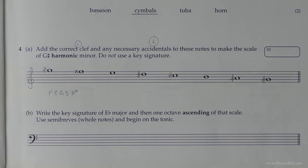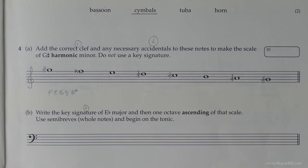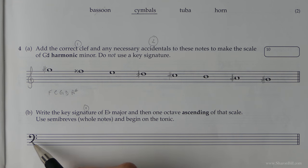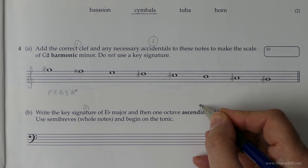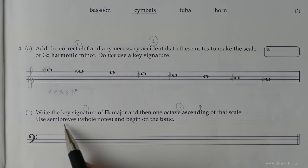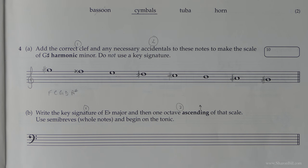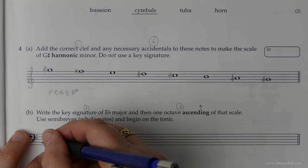So now, write the key signature of E-flat major. We've given us the clef. And then one octave ascending. So we're going up. I'll use semibreves, whole notes so we don't have to worry about stems. And of course begin on the tonic.